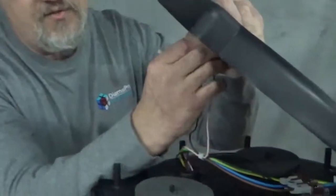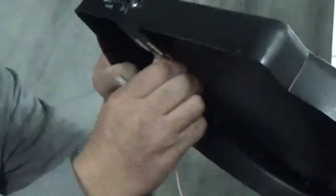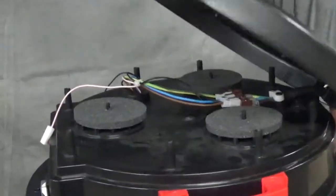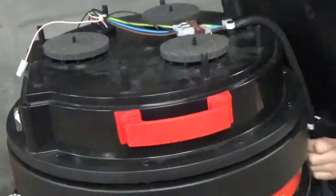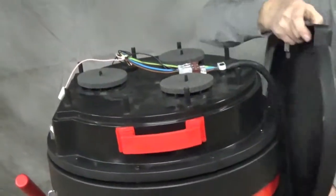First, we're going to remove the wires from the hour meter, set them out of the way, and now, while holding on to the power cord, slide the cover along the cord to get it out of your way to gain access to the main wires.